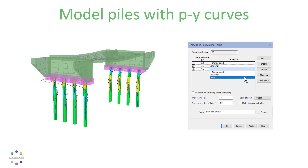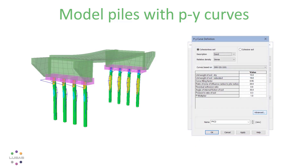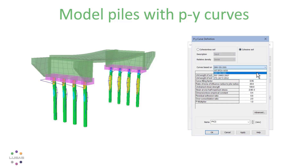Each layer can be defined as cohesionless sand, silt, or gravel, or cohesive clay, with curves based on the API, DNV, ISO, or Chinese JTS codes.